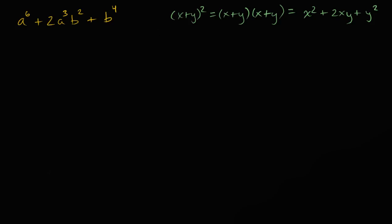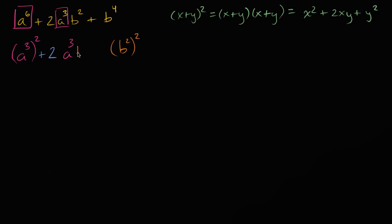Notice: a to the sixth is the same thing as a to the third squared. And then we have an a to the third right here in this middle term. We have that a to the third and of course the plus two. And then b to the fourth — that's the same thing as b squared squared — and of course we also have a b squared in this middle term. So when you write it this way, it has the exact same pattern as x plus y squared.